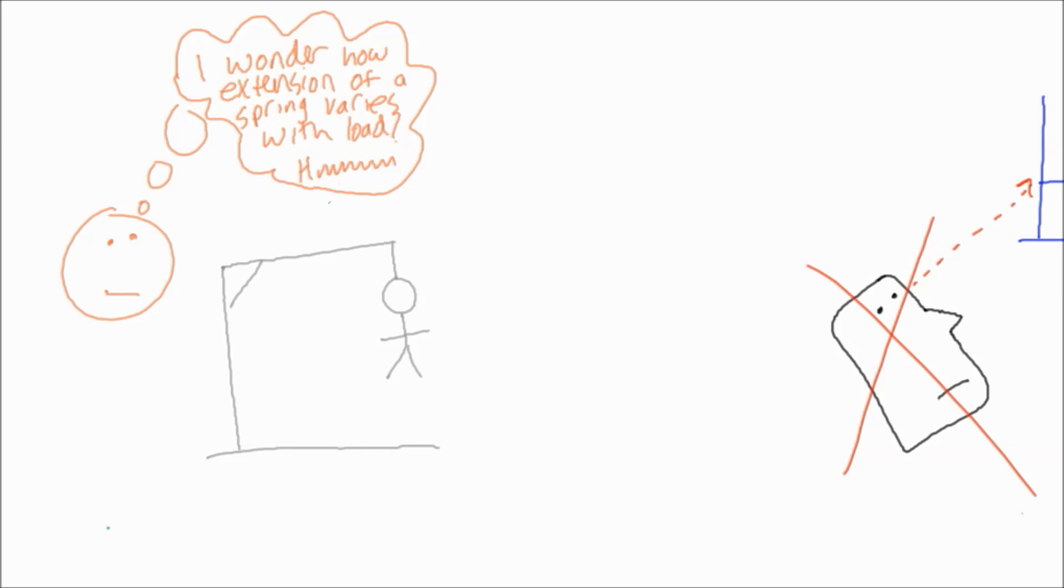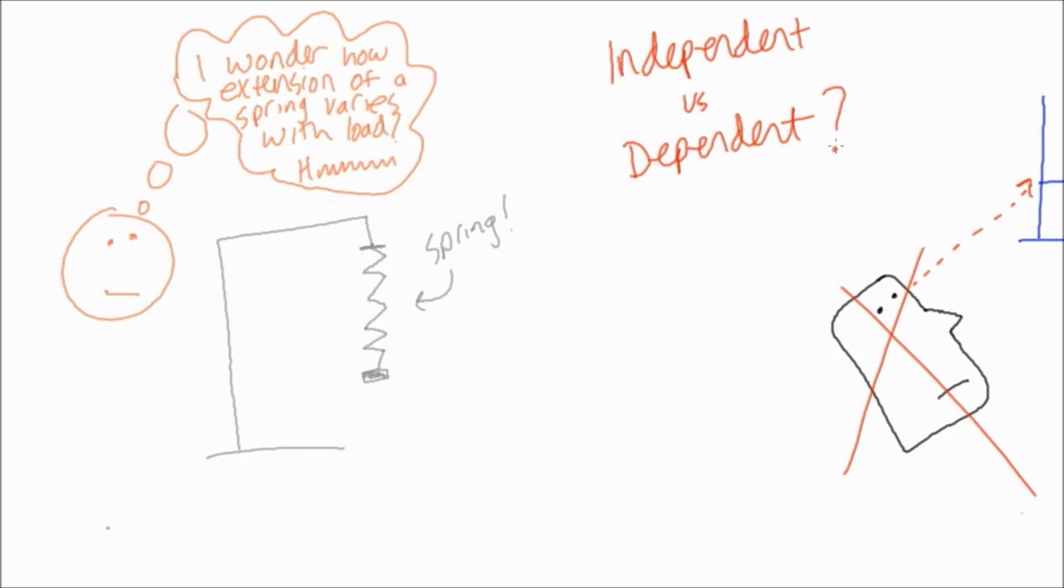You get a diagram of what we're looking at, so it's a spring on a clamp stand. Just a brief aside: which one is the independent and which one is the dependent variable in that question? Student investigates how the extension of a spring varies when he hangs loads on it.